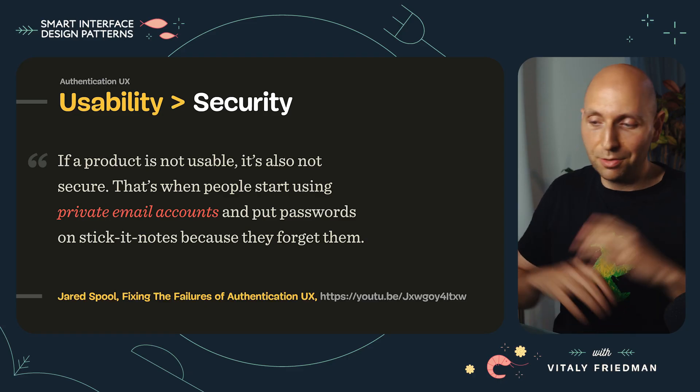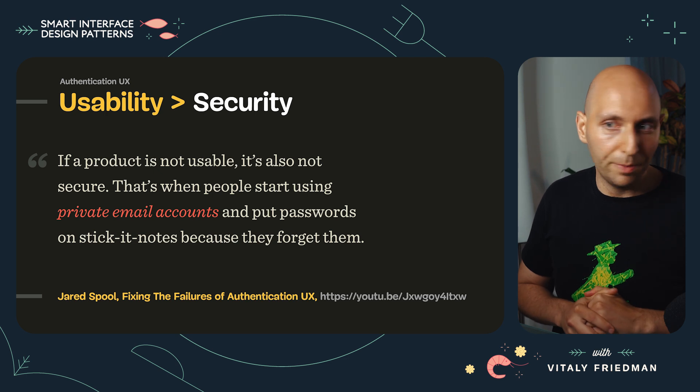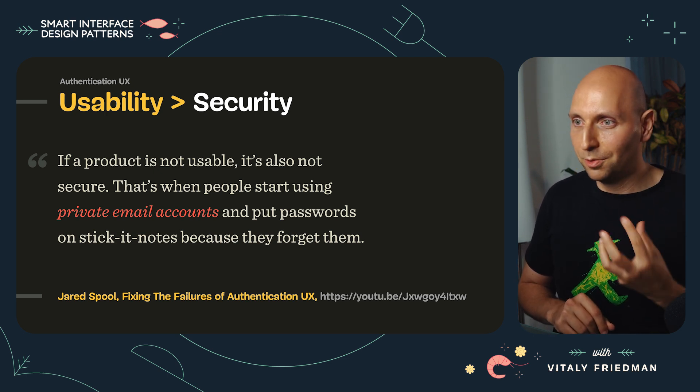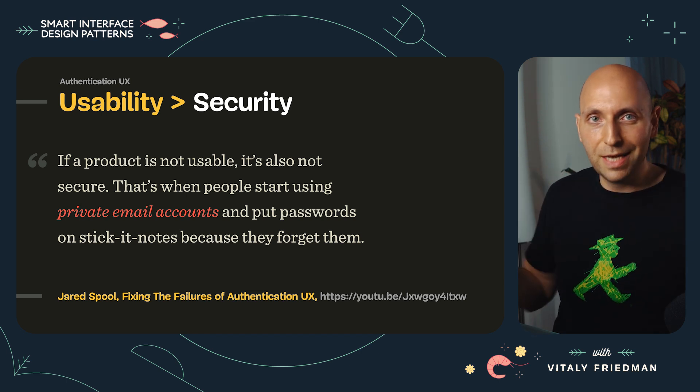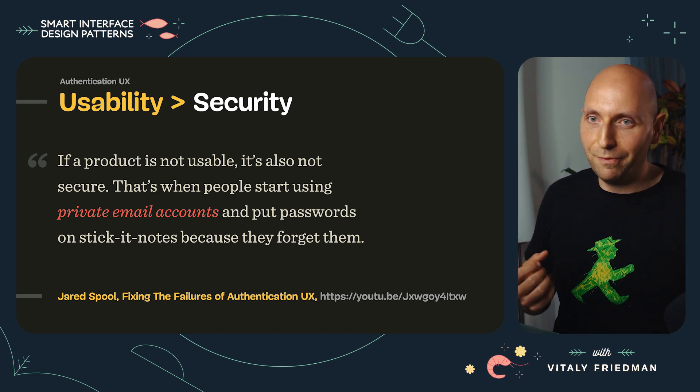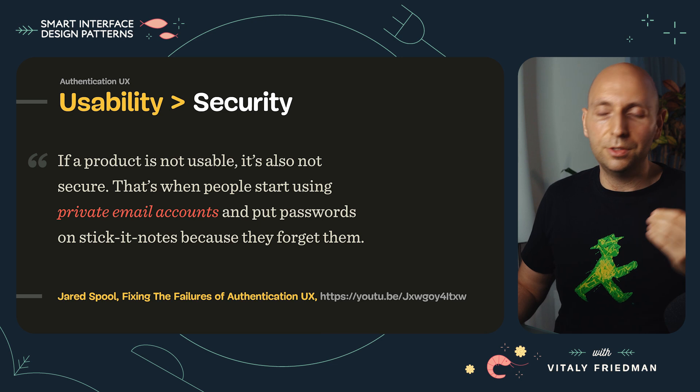We probably need to turn the table around here. Because instead of favoring security against usability — which is often the necessity, because we want to make sure that data is protected, properly saved and stored — the problem is that very often when we make things too hard to use but secure, users find a way to trick the system. Jared Spool had an incredible talk on fixing the failures of authentication UX, and he said a couple of things that really stuck with me. He said: if a product is not usable, it's also not going to be secure.